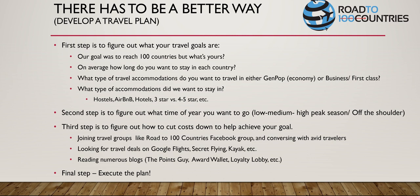What type of accommodations do you want to stay in? You have hostels, Airbnbs, hotels - three star versus four or five star. For us, it was four to five star and above. One thing I learned: three star in the U.S. is not the same as three star internationally. So if you really want nice accommodations, go four star and above because everybody's three star is not the same.